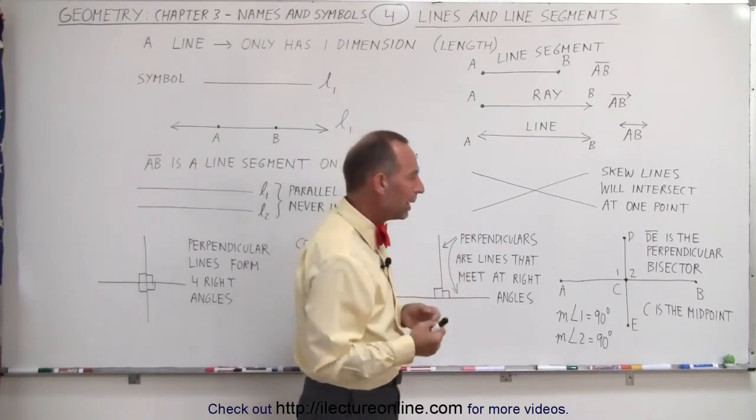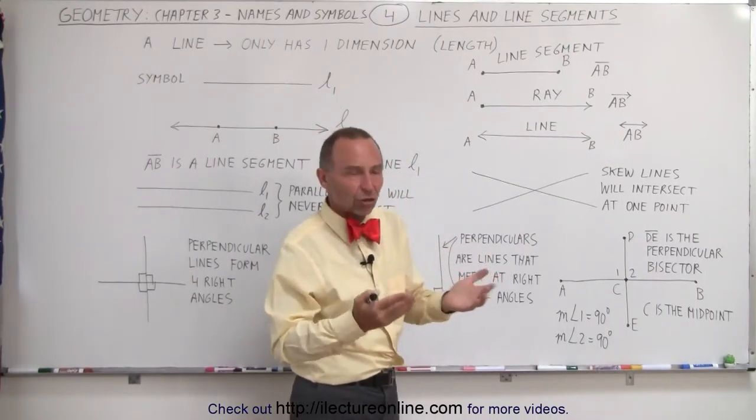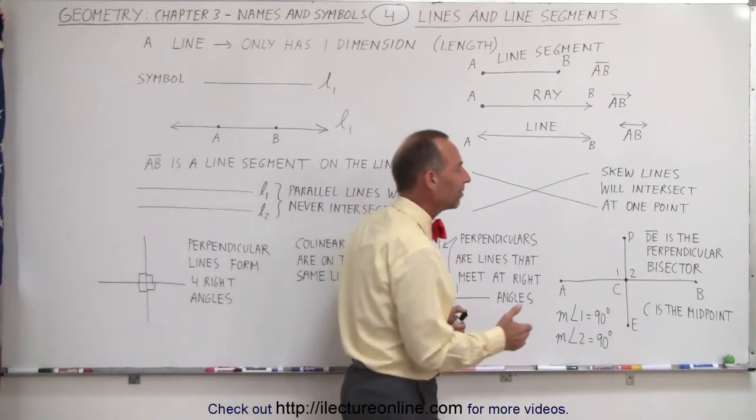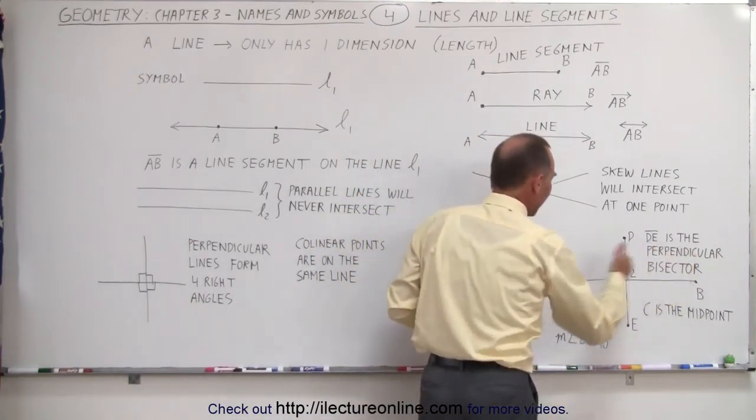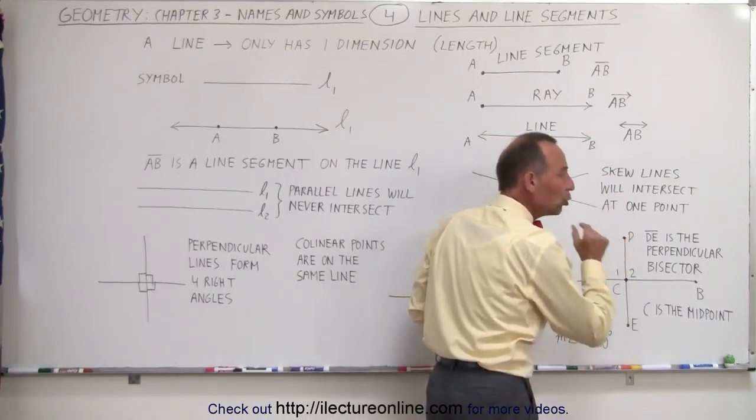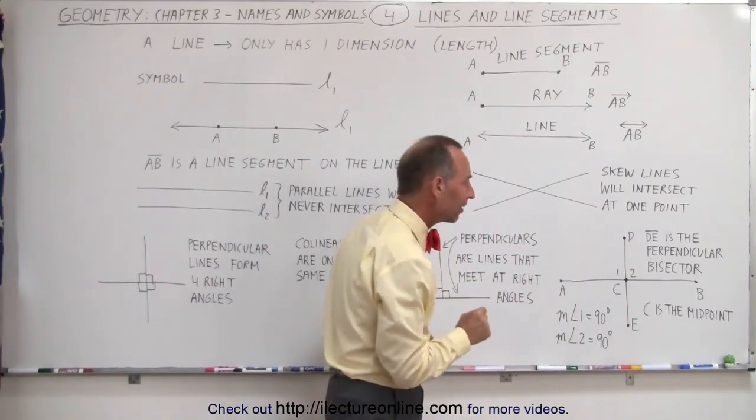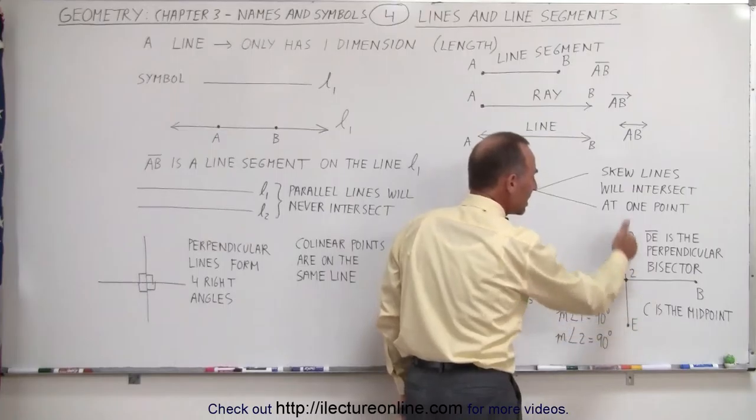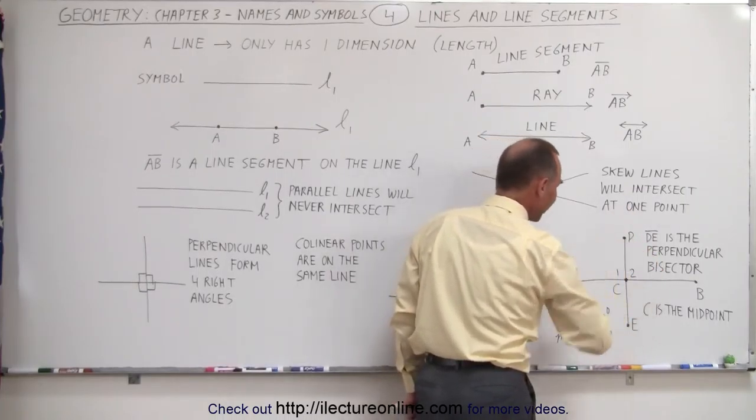Notice that if DE is considered to be a perpendicular bisector, bi means two, and sector means sections or halves. We can then say that the line segment from A to B is divided into exactly two equal pieces. If that's the case, then the line segment DE is called a perpendicular bisector.